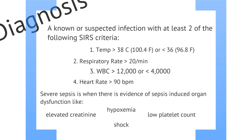Severe sepsis is classified when there is evidence of sepsis-induced organ dysfunction, such as acute kidney injury, hypoxemia, or a low platelet count. When a patient develops shock or hypotension during sepsis, this is called septic shock.